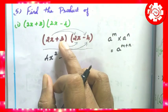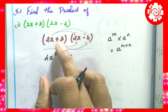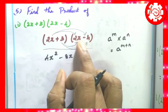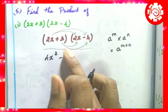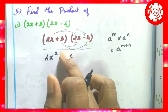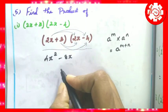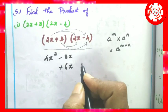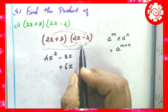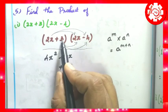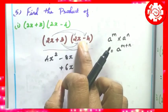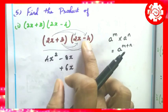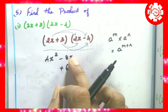Now the second one: plus into plus is plus. 3 times 2 is 6, and x gives us 6x. Then x gives 6x. This is the constant term.